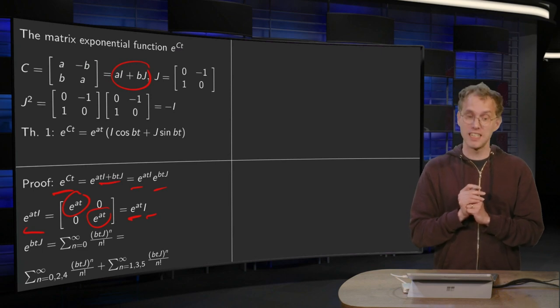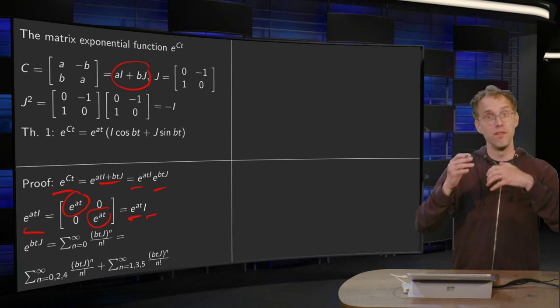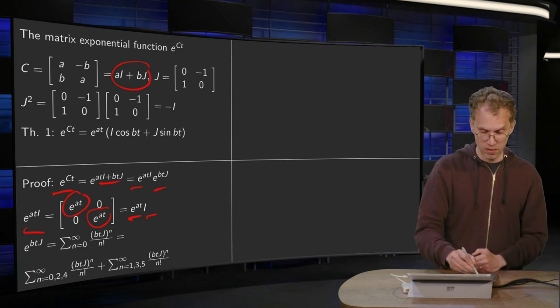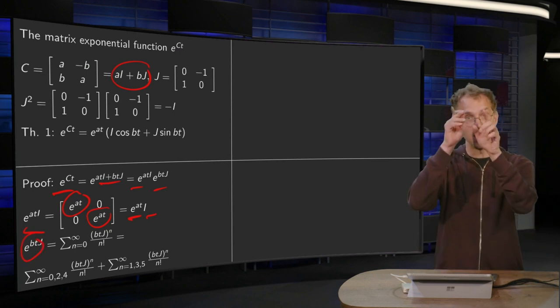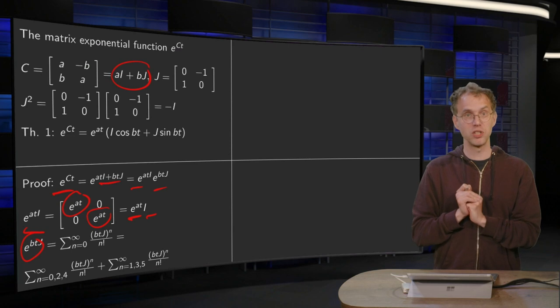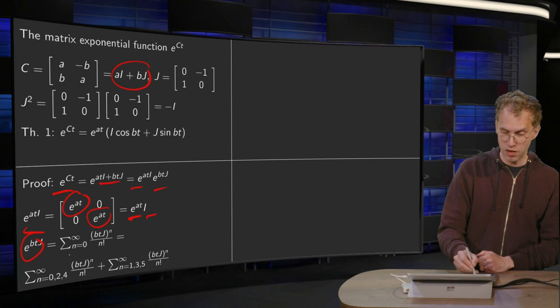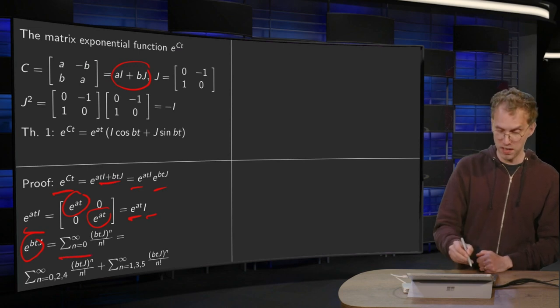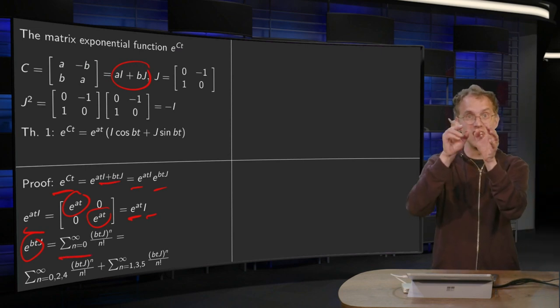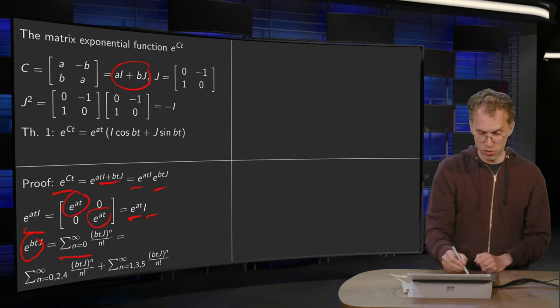Then the second part. For that part, we use the definition. So e to the power bt times j, btj in the exponential. Use the definition, the power series of the exponential function. So we sum n from 0 to infinity, then btj to the power n divided by n factorial over here.